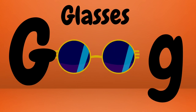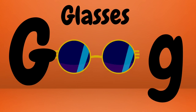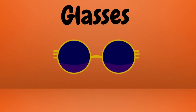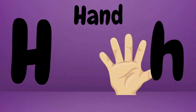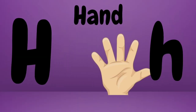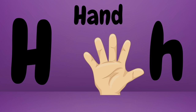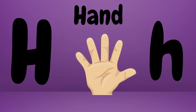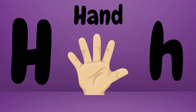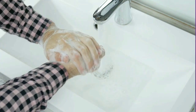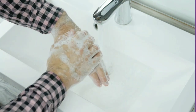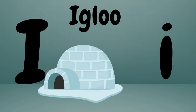G is for glasses. Glasses. Glasses. This is a glasses. Glasses. H is for hand. Hand. Hand. This is a hand. Hand.